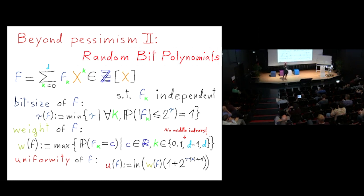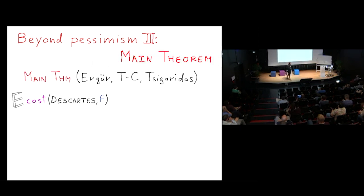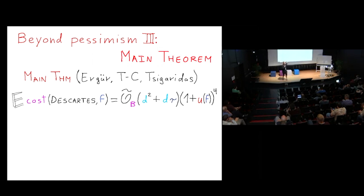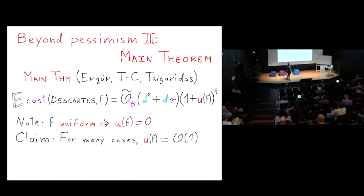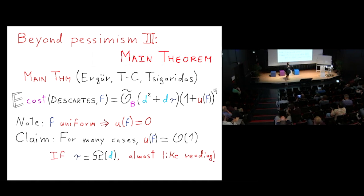The uniformity u_f appears in the general theorem: the expected complexity is Õ(d²(1 + u_f) + d·tau). If f is uniform, u_f = 0 and we recover the earlier bound. In many cases the uniformity parameter is a constant, so we get a nice bound. When tau is comparable to d, solving is almost as fast as reading the polynomial — Descartes is almost optimal on average.